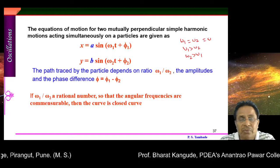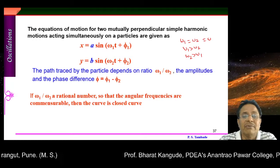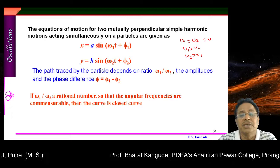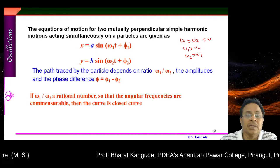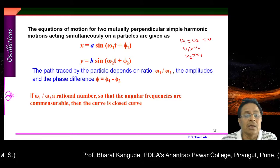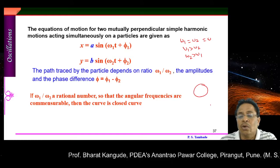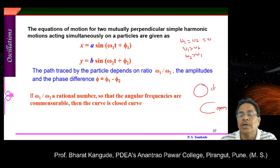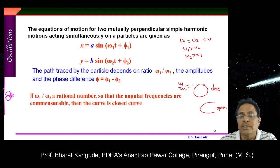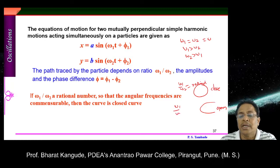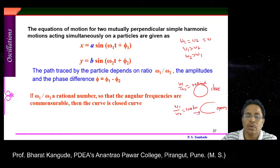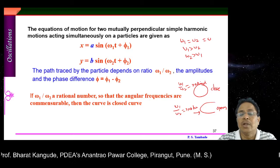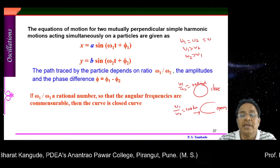The path traced by the particle depends upon the ratio ω₁/ω₂ — whether 1:1, 1:2, 2:1, 1:3, and so on — as well as the amplitudes and phase difference φ = φ₁ − φ₂. If ω₁/ω₂ is a rational number, the angular frequencies are commensurable and the curve is a closed curve. When ω₁/ω₂ is irrational, we get an open Lissajous figure. So to get a closed curve we need a rational ratio of frequencies.